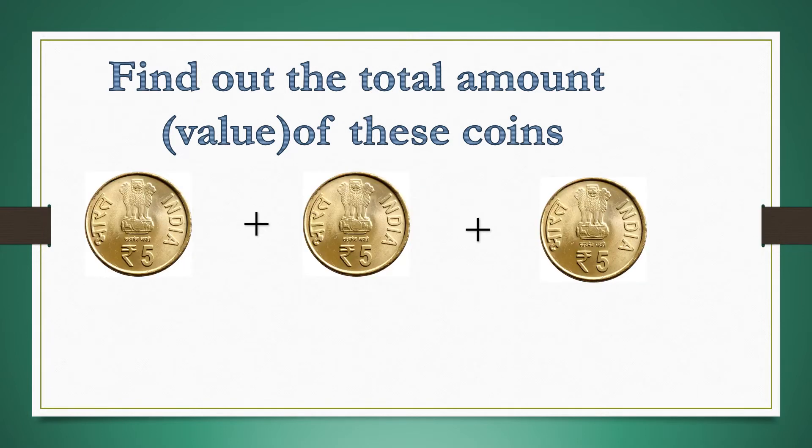There are three 5 rupees coins given. When we add these 3 coins: 5 plus 5 is 10, and 10 plus 5 is 15. So, in all, we get 15 rupees.